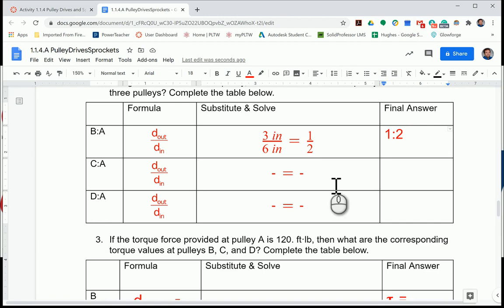That's what you're doing for this section. Go ahead and look at C to A. Since A is the input, it's always going to be on the bottom, that's six inches. And then you're going to compare and see what kind of ratio that you get for the rest of the pulleys.